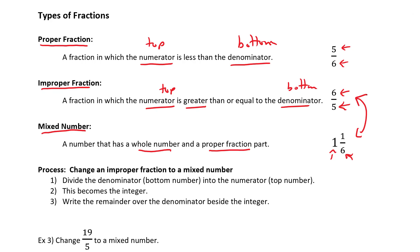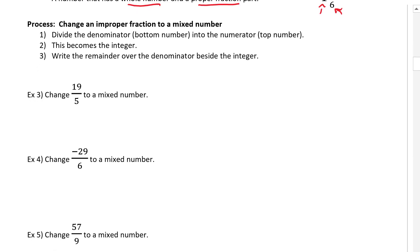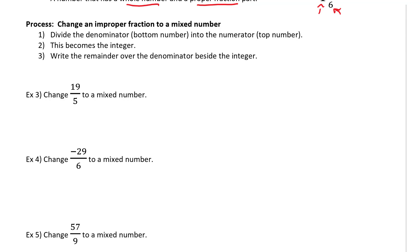Quite often when we're doing math and encounter a mixed number, the first thing you want to do is convert it to an improper fraction. Let's go through the steps. The first step for changing an improper fraction — one where the numerator is larger than the denominator — into a mixed number: step one, divide the denominator, the bottom number, into the numerator.